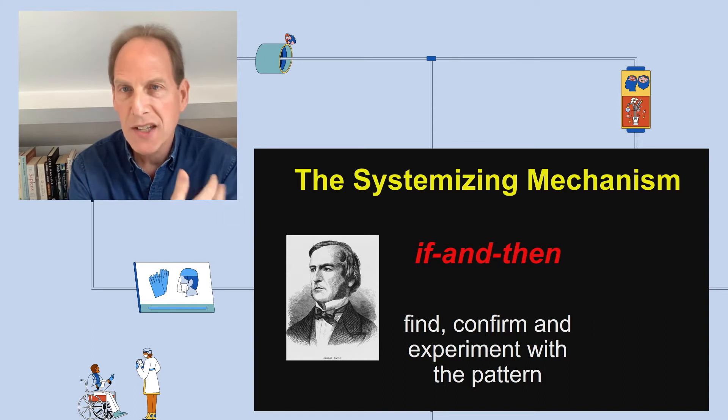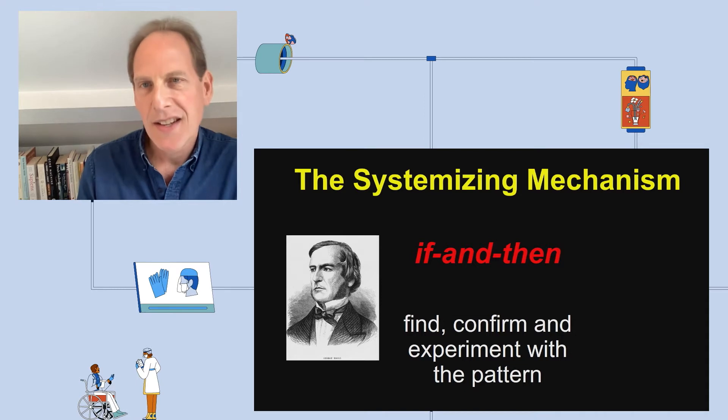The way we do this is we repeat our observations over and over again until we've confirmed them. But then we can experiment with the patterns, we can play with them. We can experiment with the if or with the and. And once we find a new pattern, that is an invention. You can see here the picture of George Boole, the 19th century logician, who first talked about the if-and-then logic in the structure of human thought.